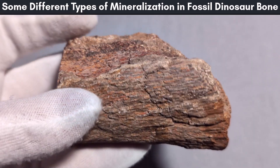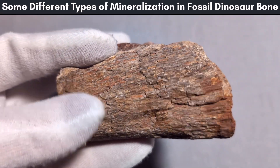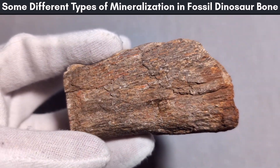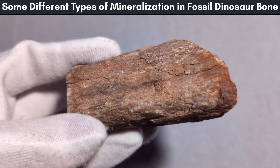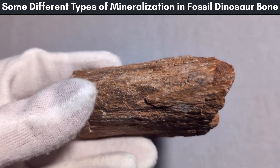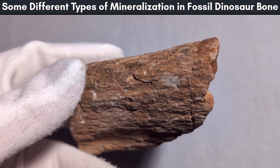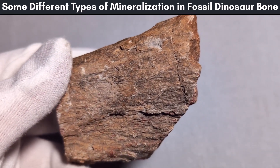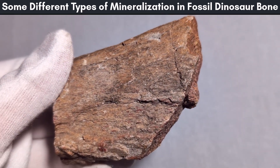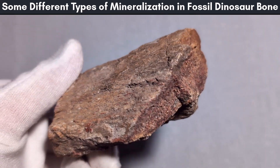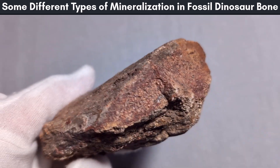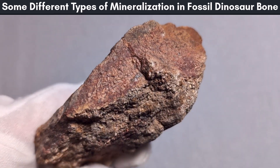I thought it would be fun to cover some different types of mineralization that can be found in fossil dinosaur bone. I'll use polished specimens as examples, since it can be tough to tell from the outside what a fossil would be like inside.